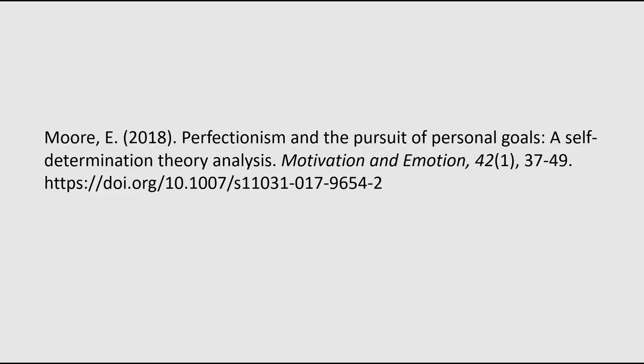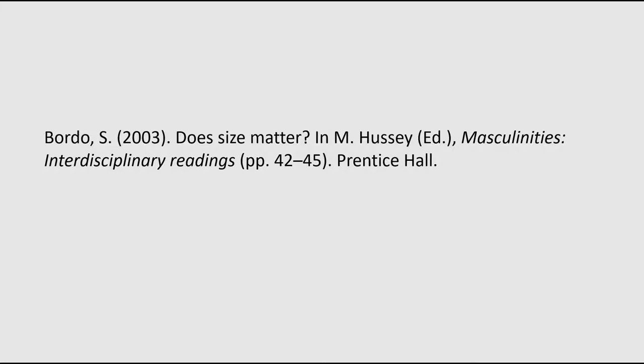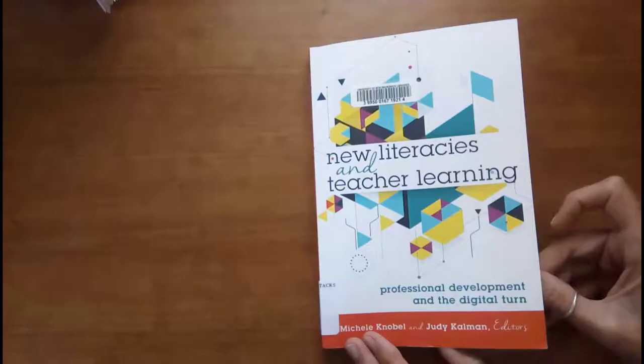There are also other parts to citations that can help you recognize the type of publication. For example, you can generally recognize a journal article citation by the italicized journal title and volume number, as well as the issue number included in the citation. You can generally recognize a book citation if you see the publisher noted at the end of the citation. Also, if you see the preposition "in" followed by a title, you can tell that the citation is for a book chapter.